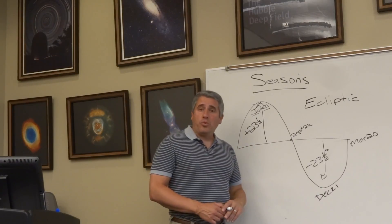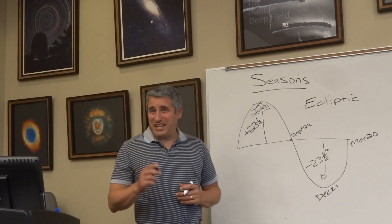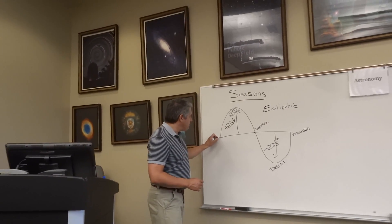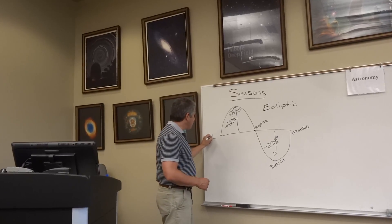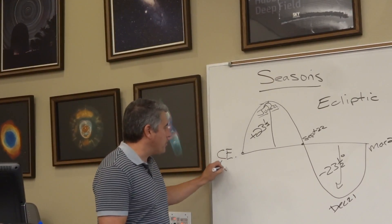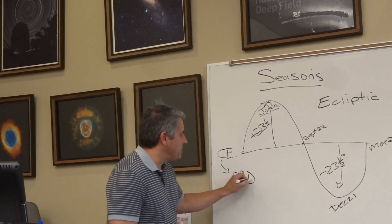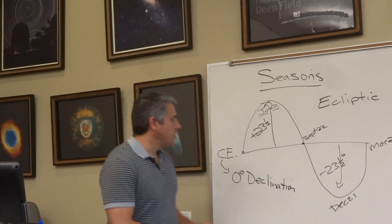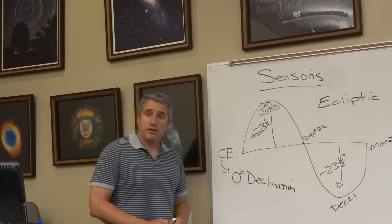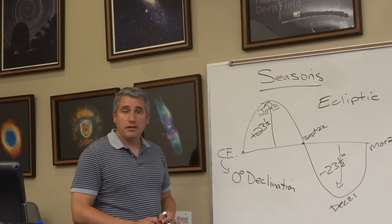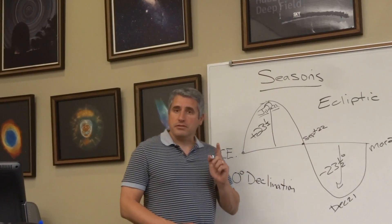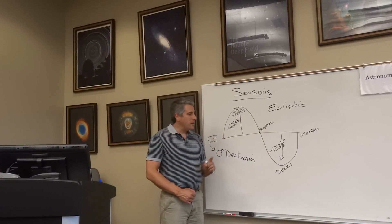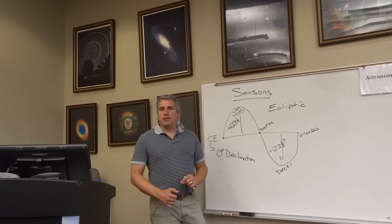That middle average number is the celestial equator — zero degrees of declination. So if someone asks the declination of the sun on September 22nd, the answer is about zero degrees. On March 20th, also about zero degrees. On June 21st, it's plus 23.5 degrees, and on December 21st, minus 23.5 degrees.